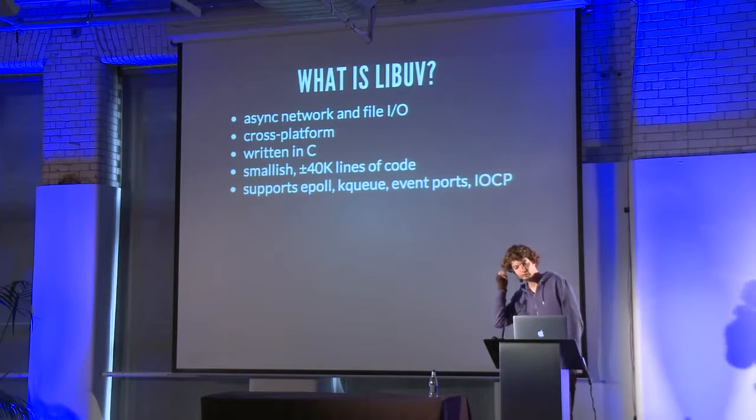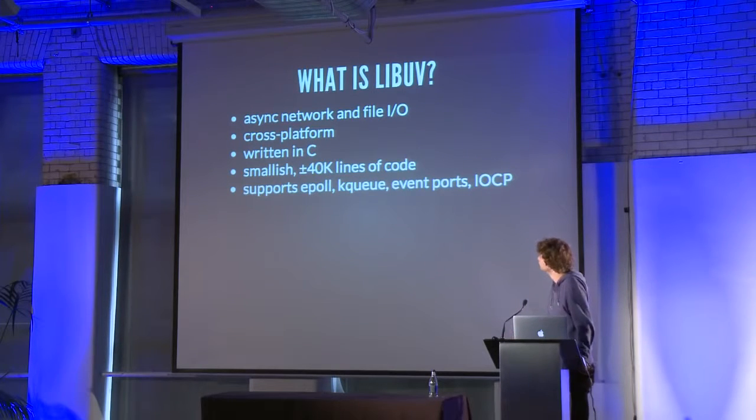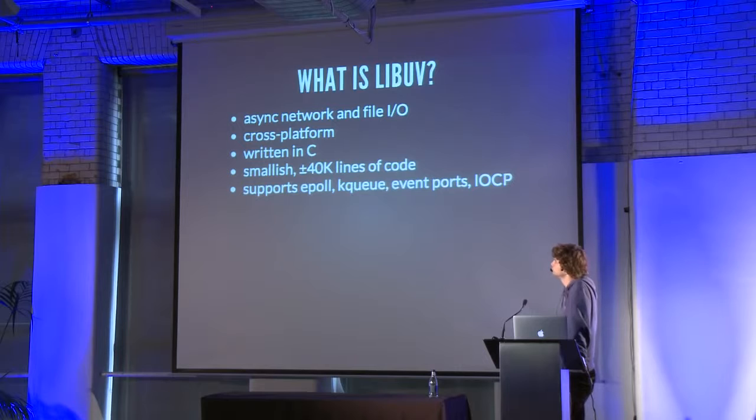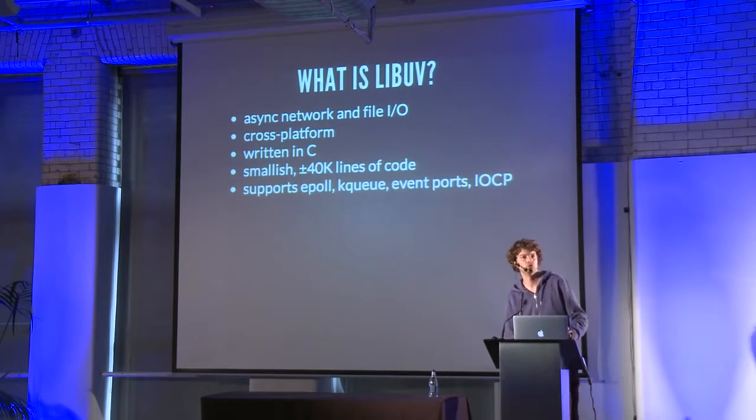LibUV is a relatively small C library that intends to provide a unified interface to the various platform-specific file and network APIs, in particular the asynchronous APIs. As such, it's written in C for maximum portability, and also to make it easy to write bindings to other languages, like JavaScript.